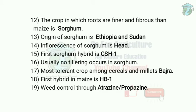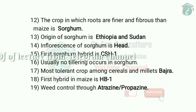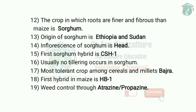The most drought-tolerant crop among cereals and millets is pearl millet, as it requires less water. The first hybrid in pearl millet is HB1, released in 1965.